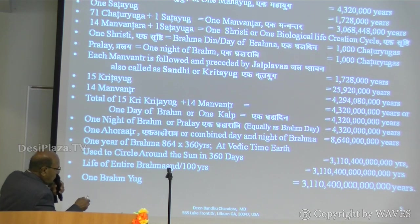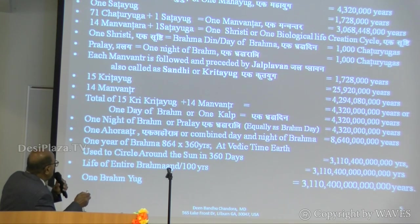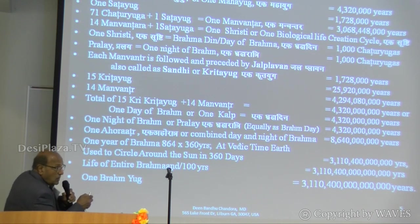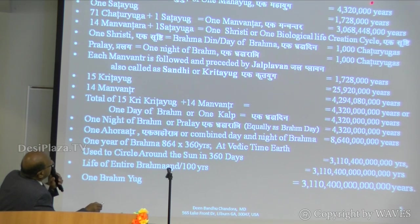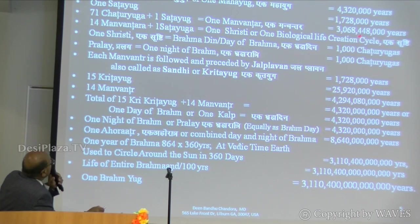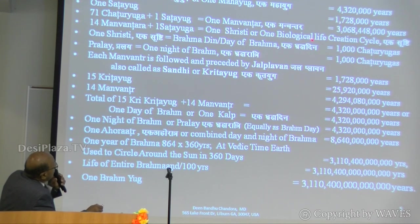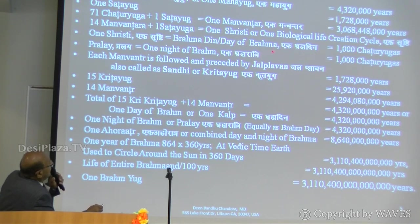Let's revisit what is the day of Brahma, which is one Kalp, and come to what is the Brahma Yuga, which is the complete age of the cosmos. One Chatur Yuga is also called one Maha Yuga. 71 Chatur Yugas plus one Sat Yuga becomes one Manvantara. One Sat Yuga is one day of Brahma — that is one Brahma Din, equal to 1000 Chatur Yugas.